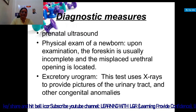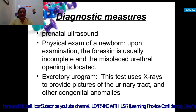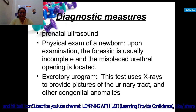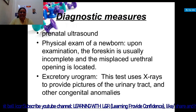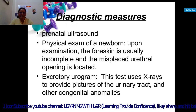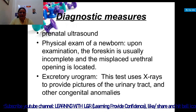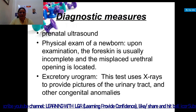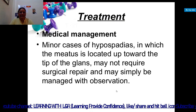The further the opening is from the tip of the glans, the more likely curvature of the penis is present. Diagnostic measures include prenatal ultrasound, physical examination of the newborn, and excretory urogram, which uses X-rays to provide pictures of the urinary tract.